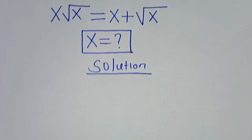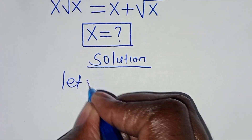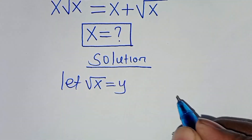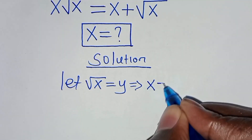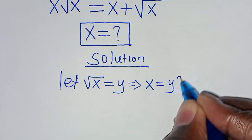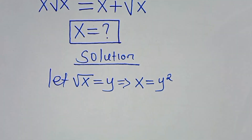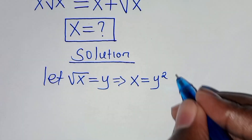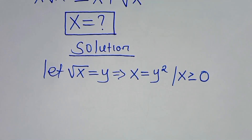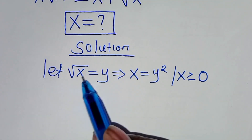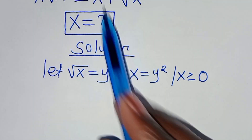The first step: we can write square root of x to be equal to y. So this implies that x is the same thing as y squared, given that x is greater or equal to 0. So let's substitute square root of x, which is y, and x, which is y squared, back to the equation.